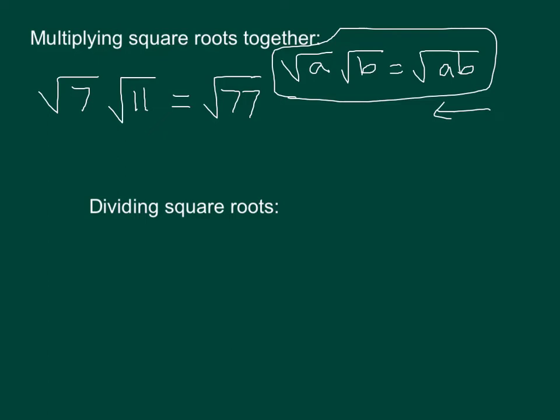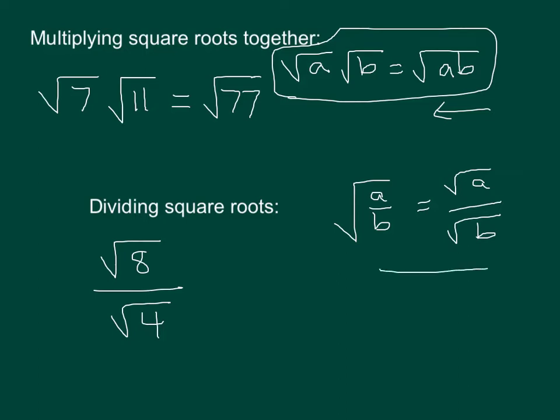Likewise, dividing square roots: if I had something like √8 over √4, I'm going to use a rule that comes out of the way exponents behave. If I have the square root of a fraction, I can take the square root of the top over the square root of the bottom. Most of us get used to doing this rule going in that direction, but it is going to be in this direction that we're going to use the rule more often than not. The √a over √b is often going to be the way the numbers are presented to us, and we're going to use the rule going this way.